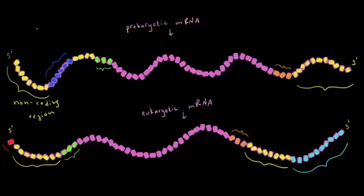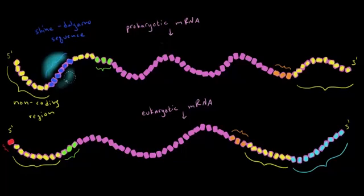After the non-coding region we have the Shine-Delgarno sequence. The Shine-Delgarno sequence is the site that the ribosome is going to recognize and bind to. So let's just do a ribosome right over here. This is where the prokaryotic ribosome is going to bind. And then after the Shine-Delgarno sequence we have another non-coding region, just going to abbreviate it NCR.